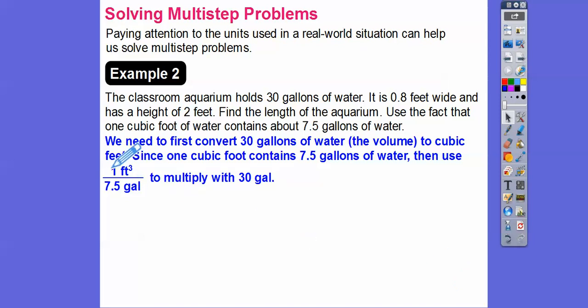So I'm just going to multiply that by 30 gallons, and you'll see the gallons cancel and we'll be left in cubic feet. We're going to convert those 30 gallons into how many cubic feet with 1 cubic foot equals 7.5 gallons of water. Notice the gallons cancel, and we're left with 30 over 7.5. So 30 divided by 7.5 is 4, so the volume is 4 cubic feet.